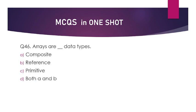Arrays are dash data types — composite, reference, private, or both A and B? The answer is option number D — arrays can be called both composite and reference, as an array refers to that kind of object.